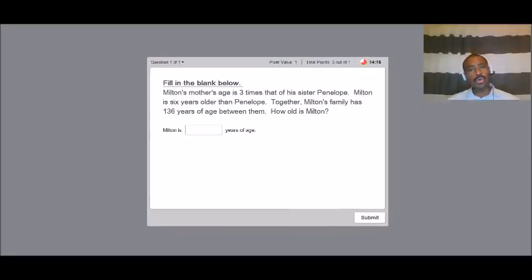Okay, Anthony, this is me getting back to your question here on question number two. So Milton's mother's age is three times that of his sister Penelope. Milton is six years older than Penelope. Together, Milton's family has 136 years of age between them. How old is Milton?